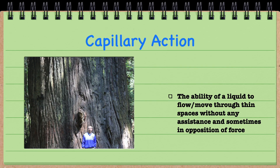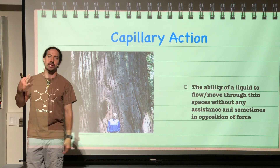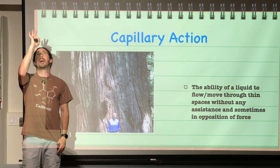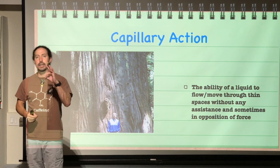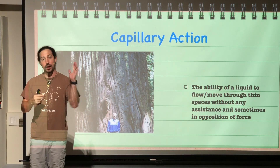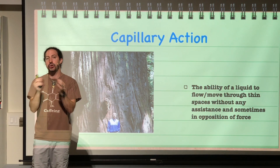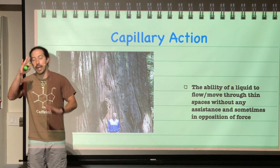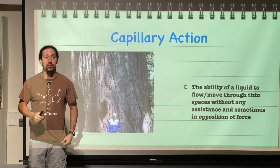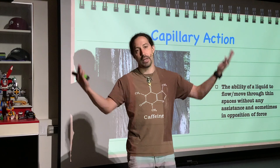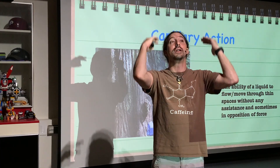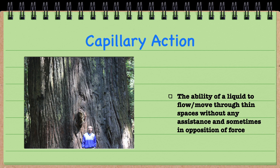Capillary action is the ability of a liquid to flow or move through spaces without any assistance. Trees use capillary action every single day — it's through capillary action that water is able to move from the roots all the way up to the leaves. The water coheres to itself and adheres to the sides of the tube, and because the tube is so narrow, that cohesion and adhesion allows it to fight against gravity and move to the tops of trees. Without capillary action, our plants would be much, much shorter.